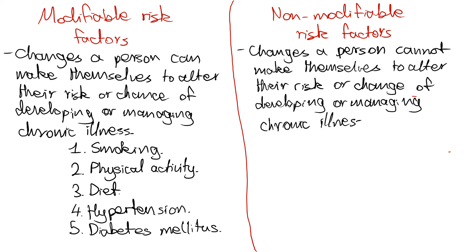So what are some examples of non-modifiable risk factors? Well, the most common one is gender or sex. It's widely accepted that males are at a higher risk of developing cardiovascular conditions compared to females. On the other hand, females are more likely to develop autoimmune conditions as opposed to males. So as you can see, your sex can determine your likelihood of developing a particular condition, but it's not something that you can change.